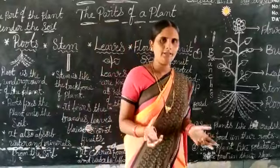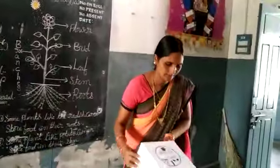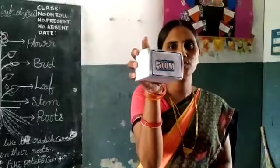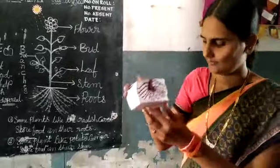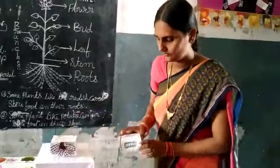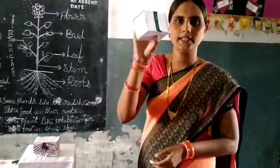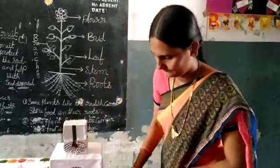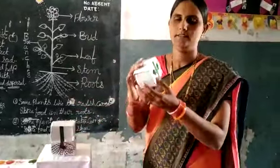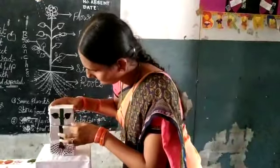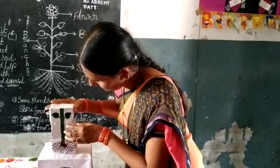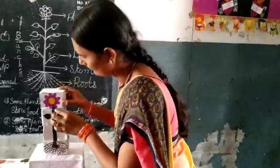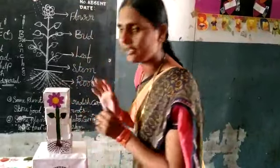Children, again, let's look at the parts of a plant. These are roots. Next, this is a stem. These are leaves. Now, this is a flower. Children, our plant is ready.